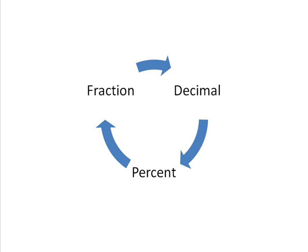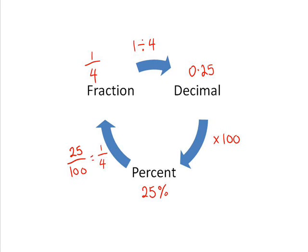So, in order to change between these, we'll just run through this a few more times. Say we've got that fraction of a quarter. We went 1 divided by 4, which gave us the decimal of 0.25. 0.25 times 100 gave us the percent of 25%. And then to change this percentage into a fraction, we can put this 25 over 100. This can be simplified: 25 divided by 25 gives you 1, 100 divided by 25 gives you 4. So 25% as a fraction is one quarter.